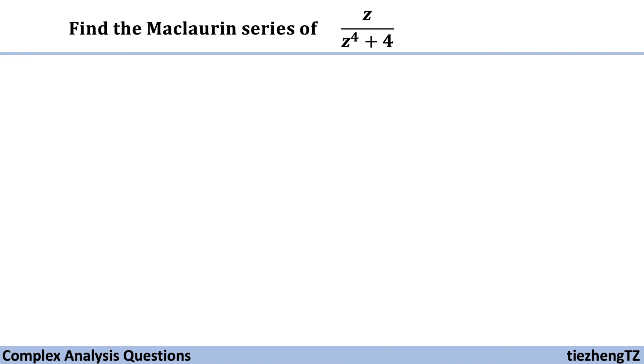Today's question is to find the Maclaurin series of the function z over z to the power of 4 plus 4. We have already introduced many similar questions in the previous videos, so in this case we have the numerator and denominator parts.